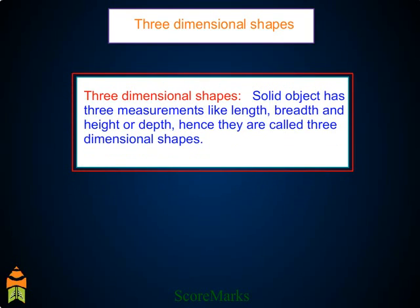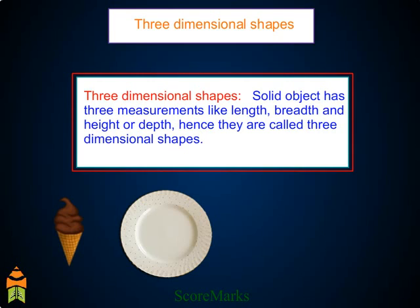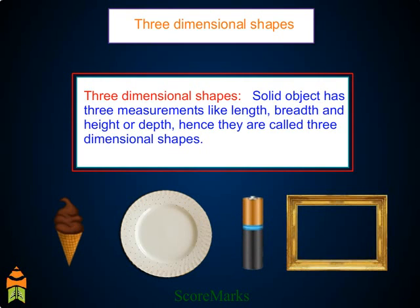In our daily life, we come across these shapes like soft tea, ice cream — just like a cone. A bowl, like a hemisphere. A cylindrical cell is in the shape of a cylinder. A photo frame, just like a rectangular patch, etc.